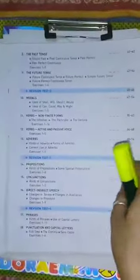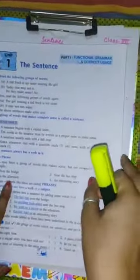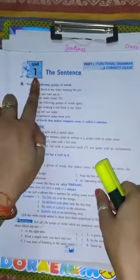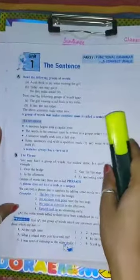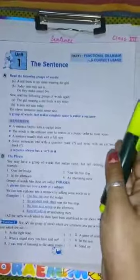As you can see the index of the book, there are total 26 lessons, but today we are going to start with lesson 1, unit 1, the sentence. Part 1 of this book is functional grammar and correct uses.